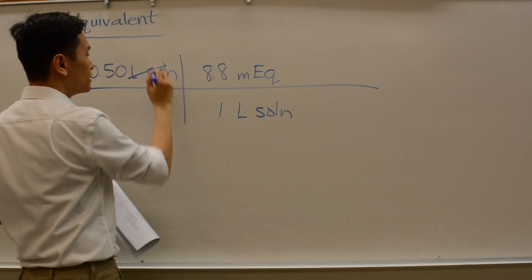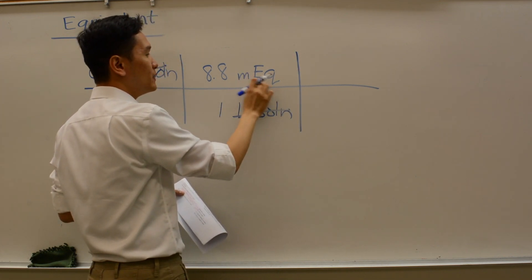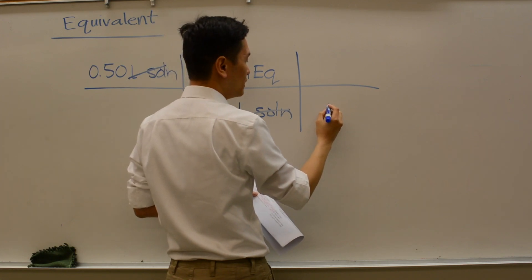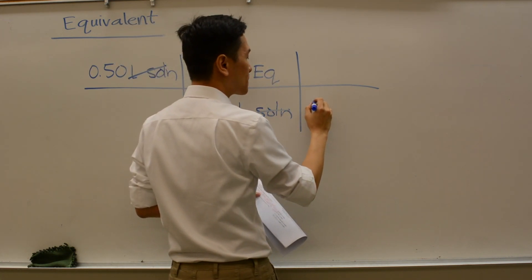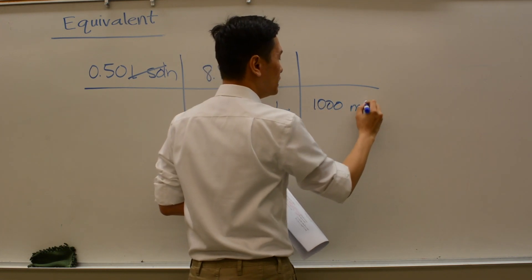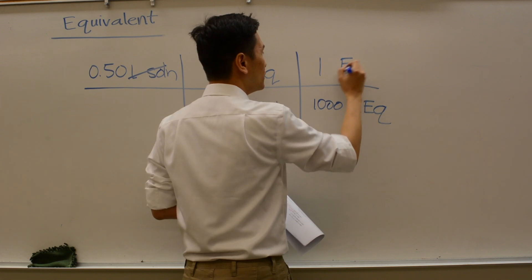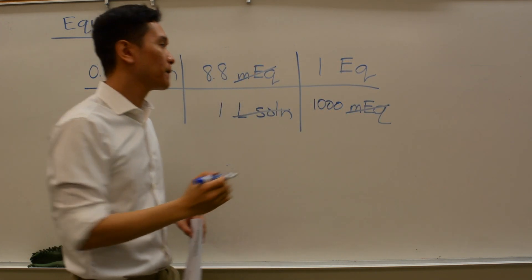We need to go to how many moles of calcium, right? So right now we have liters canceling out and we have milliequivalents. Now, milliequivalents is not equivalents, so let's convert it into equivalents. What's the relationship between milliequivalents and equivalents? 1,000 milliequivalents is equal to 1 equivalent. So those cancel out.